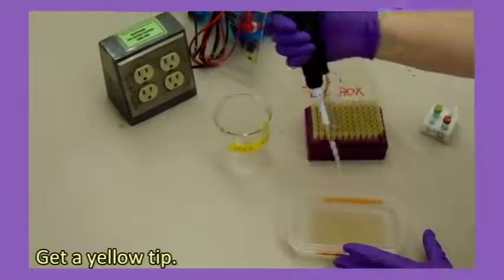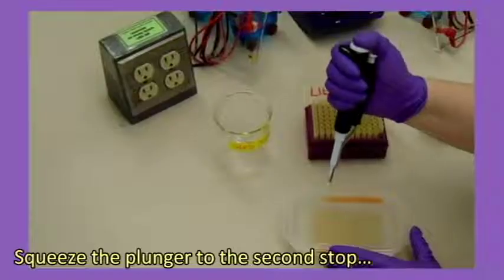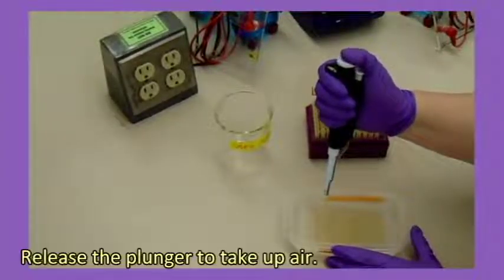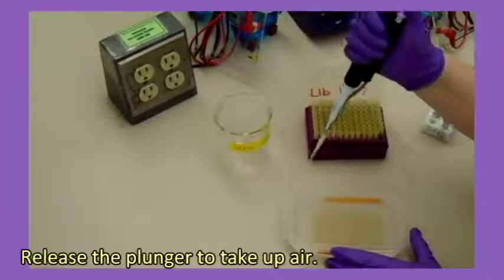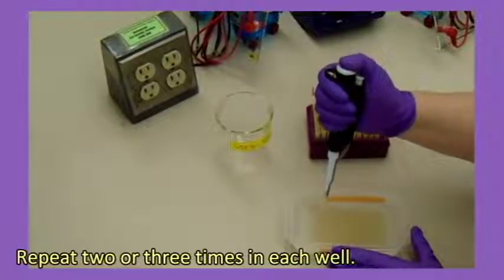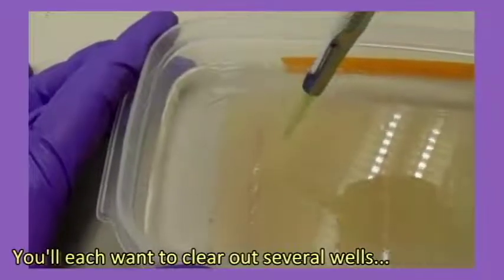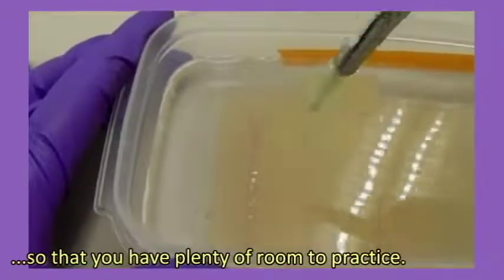Get a yellow tip. Squeeze the plunger to the second stop and put it into a well with a bubble. Release the plunger to take up air. Repeat two or three times in each well. You'll each want to clear out several wells so that you have plenty of room to practice.